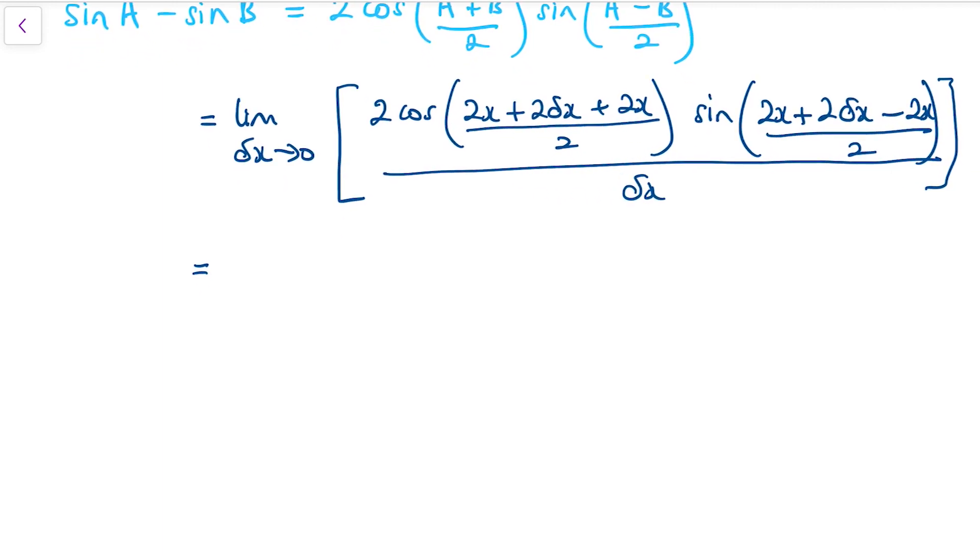We can now start to simplify this. We've still got the limit as delta x tends to 0. We've got 2s everywhere, so we can cancel the 2s. That 2 will cancel with those, leaving us with 2x plus delta x. And then the 2x and negative 2x will cancel, and these 2s will cancel, just leaving me with delta x. That's still all over delta x.